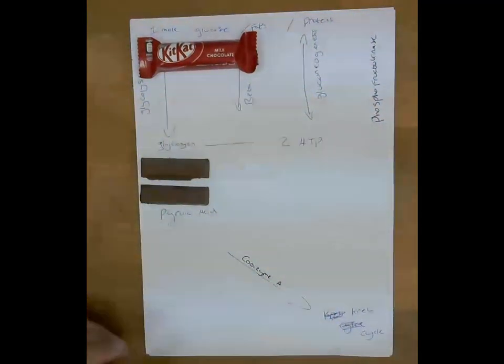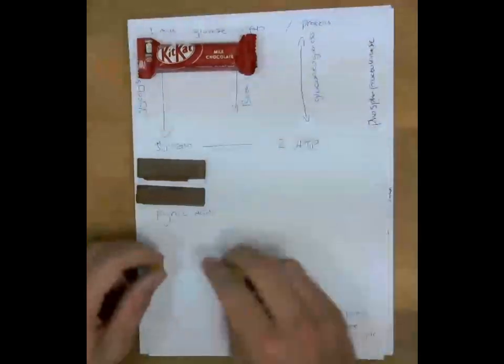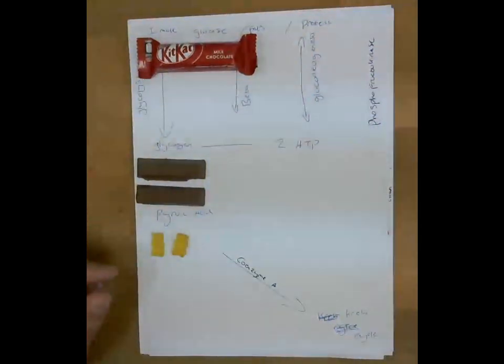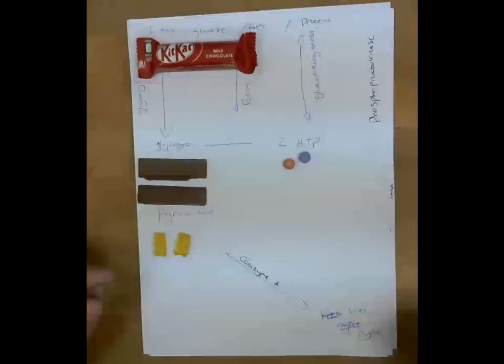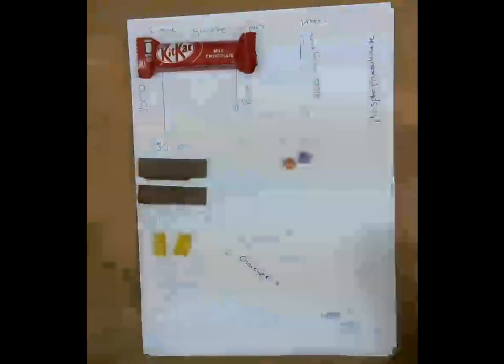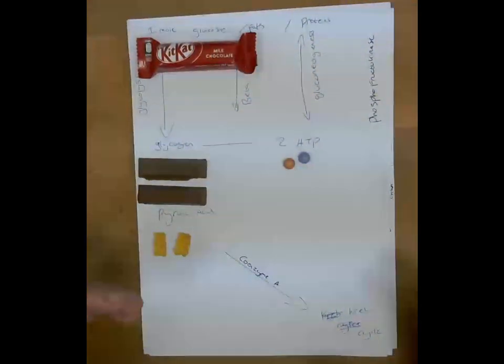This will then become, again, two ATP and our pyruvic acid. So we've got two ATP and our pyruvic acid. So that's how that process would work. Pretty much, in fact, identical to our lactic acid system up to this point.